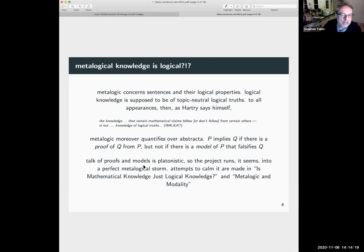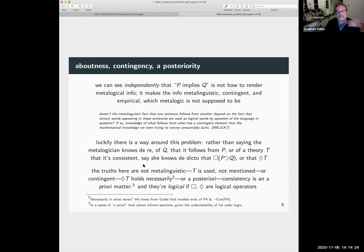All right, so some of this is from Hartree and some of it I've just sort of added on using some notions that he might or might not like, but he definitely says the following. Look, independently of any other issues, we can see that P implies Q is not how to render metalogical information.